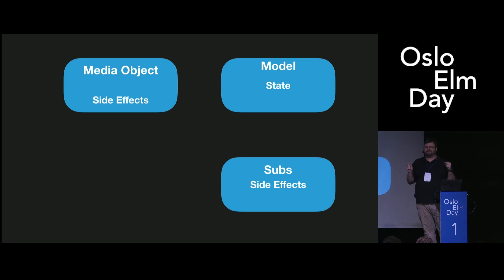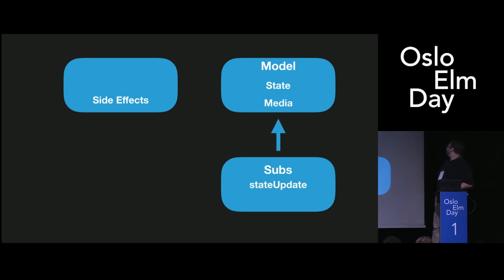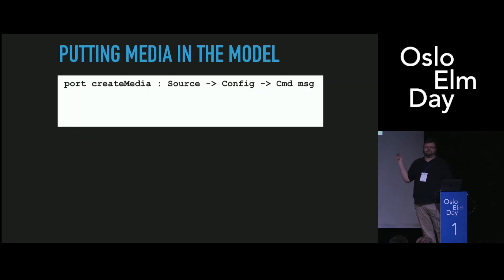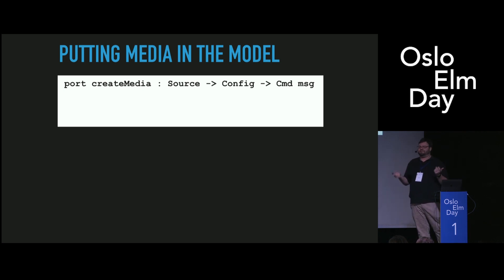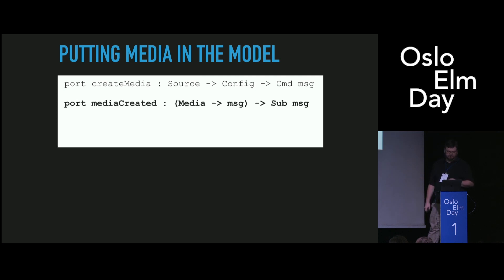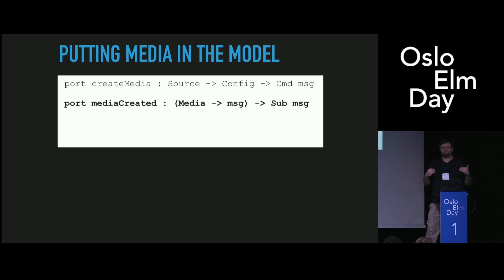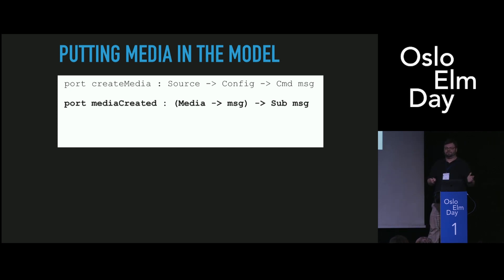Here's where I'm going to get really radical and controversial: I want you to take this media object and put it in your model. I want you to have at least a reference to it in the model so that when you're reaching out through ports to control side effects — to control playback, pausing — you never get it wrong. So what I've been doing is sending out a port to create an actual DOM node that is invisible. Using create media, you give it a source, you give it some configuration: does it loop, is it muted, what's the volume? And you send it out through the port. And once we've sent it out through the port, we can receive it back — media is an opaque type that has an actual decoded value. I'm just sending the object right back through, and it's being managed in your model.